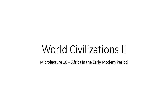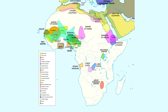Micro lecture number 10: Africa in the early modern period. At the beginning of the early modern period, from 1500 to 1650, some regions of the African continent were becoming increasingly involved in international trade with the Far East, the Middle East, and Europe.